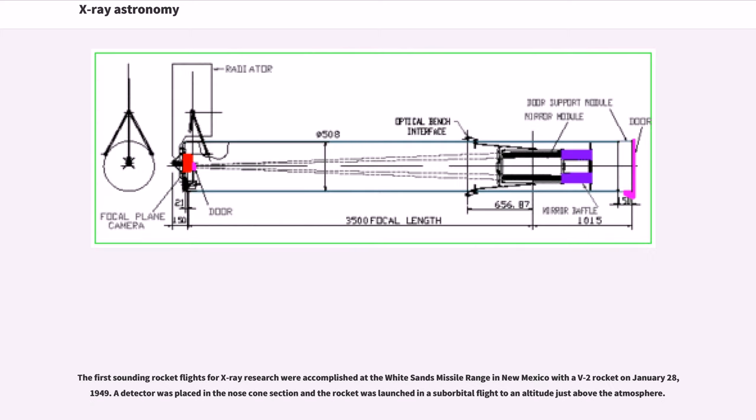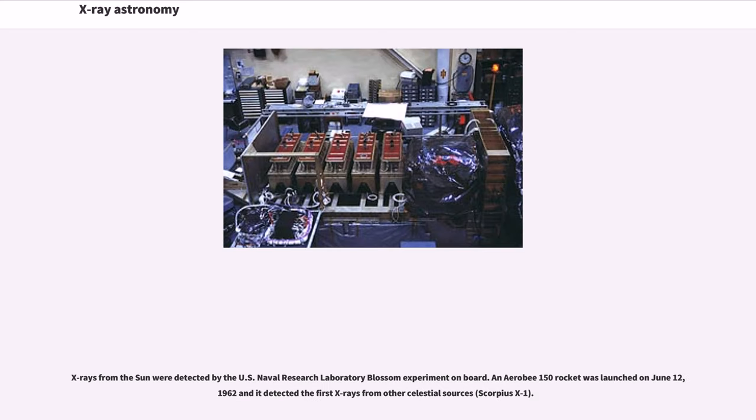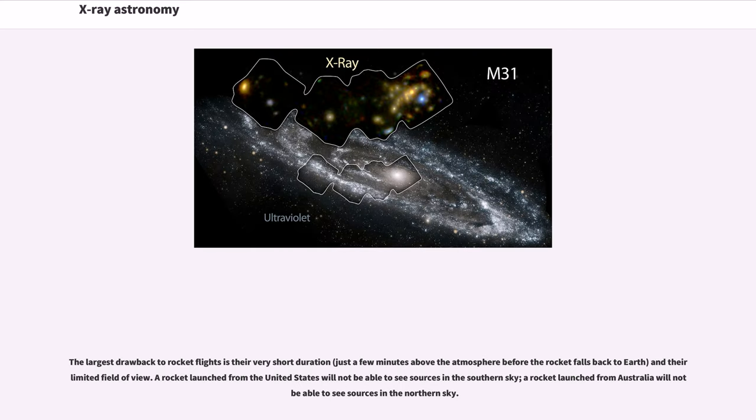The first sounding rocket flights for X-ray research were accomplished at the White Sands missile range in New Mexico with a V-2 rocket on January 28, 1949. X-rays from the Sun were detected by the U.S. Naval Research Laboratory. An Aerobee rocket launched on June 12, 1962 detected the first X-rays from other celestial sources. The largest drawback to rocket flights is their very short duration and their limited field of view. A rocket launched from the United States will not be able to see sources in the southern sky.